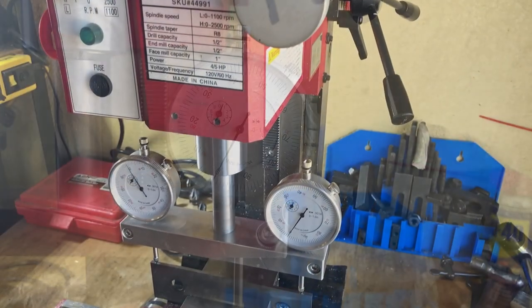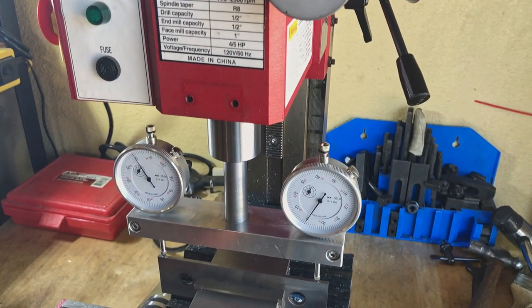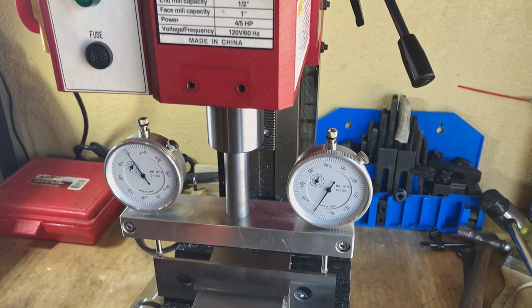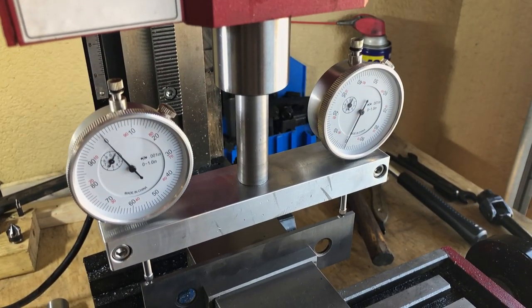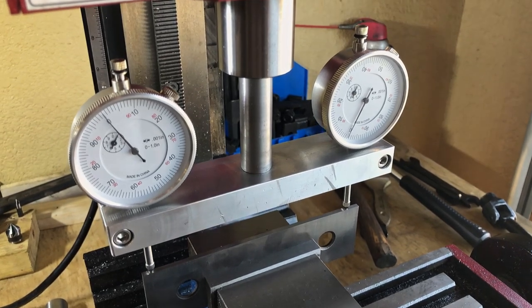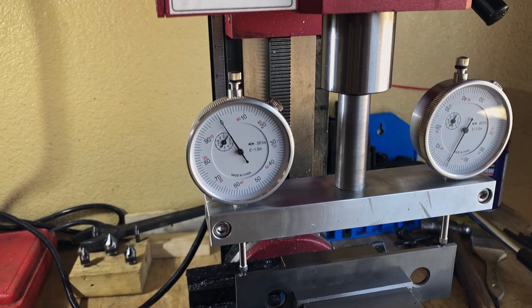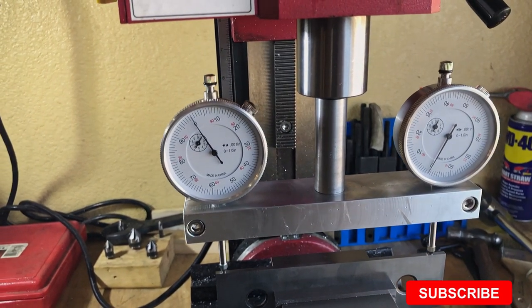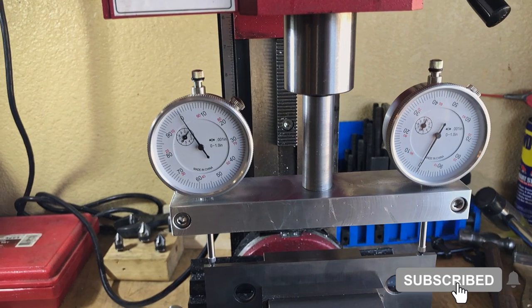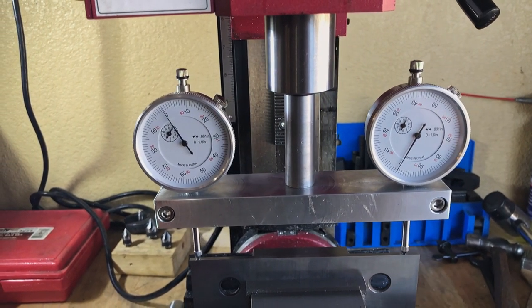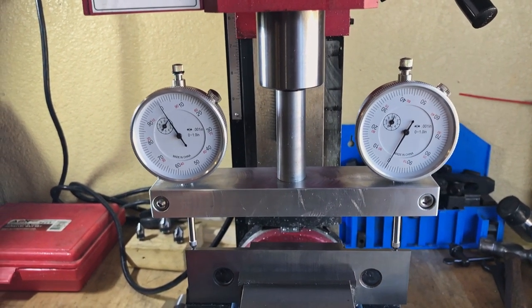And in very short order with this spindle square, I was able to get this mill back in tram with the vice. So I was very happy with how this piece turned out and how easy it was to use. I will be using it in the future for sure to check the tram and also to bring my mill back into tram if it ever gets knocked out. I hope you guys really enjoyed this video. If you did, go ahead and hit the like button down below and consider subscribing to the channel. Until the next time, I'll catch y'all on the flip side.